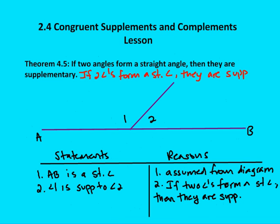I'll call this a half theorem — theorem 4.5 — because you need to be able to add this theorem into your reasons in two-column proofs. It's not specifically identified as a theorem, but it relates directly to theorems four and five. Theorem 4.5 says if two angles form a straight angle, then they are supplementary. In a two-column proof, you'd first state that AB is a straight angle — which you can assume from a diagram — then state that angle one is supplementary to angle two, citing this theorem as the reason.